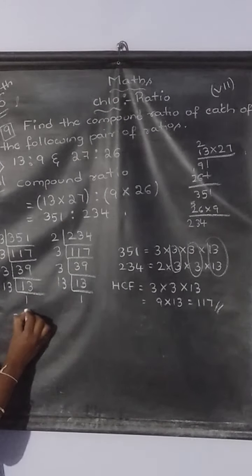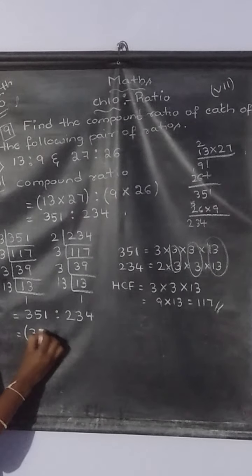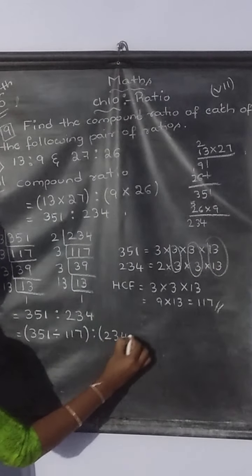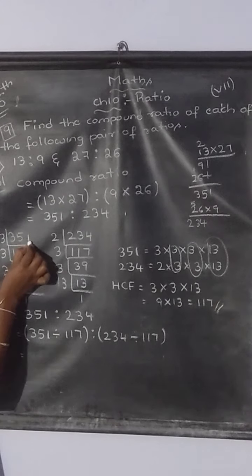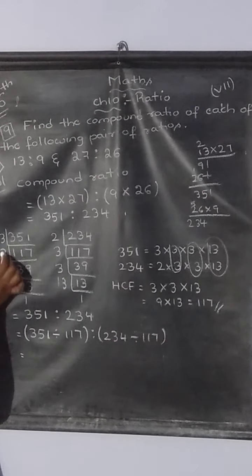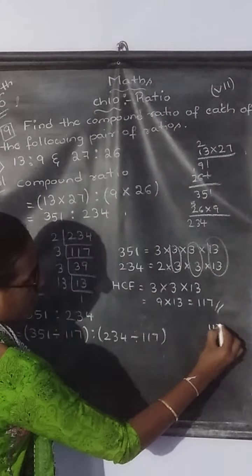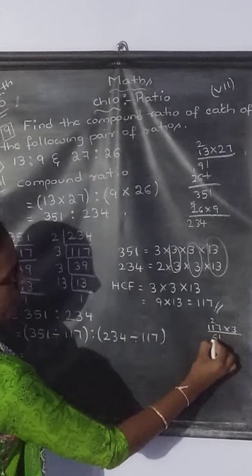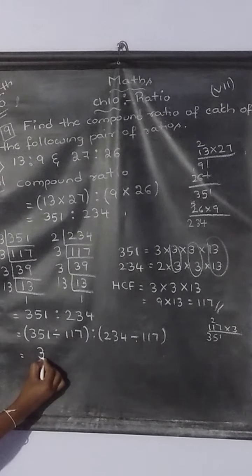Now write the compound ratio. It is 351 is to 234, which is equal to 351 divided by obtained HCF, and also divide the consequent by obtained HCF, that is 117. Now, 117 how many times is 351? See children, 117 is here and 351 is here. 3 times 3 is 9. So actually, 117 into 3 is 351. Correct. If you want you can check out. 117 times 1 is 117. 117 times 3: 7 times 3 is 21, 1, 2 carry. 3 times 1 is 3, 4, 5. 3 times 1 is 3. See, 117 times 3 is 351.